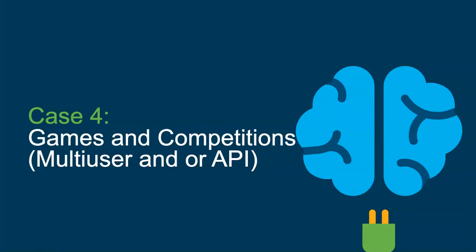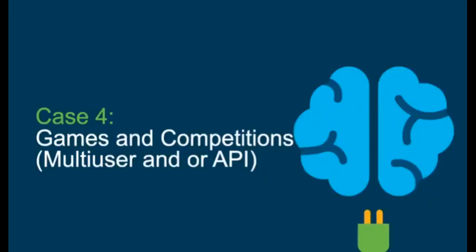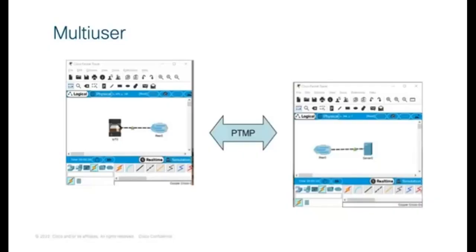Thank you, Raquel. Back to case four — let's talk about multi-user. Multi-user is a feature that has existed for at least five years, maybe more. It's one of the early development features enabled in Packet Tracer. Multi-user means you can have two instances of Packet Tracer running in two different windows, computers, classrooms, or even different cities — as long as one has a publicly reachable IP address.